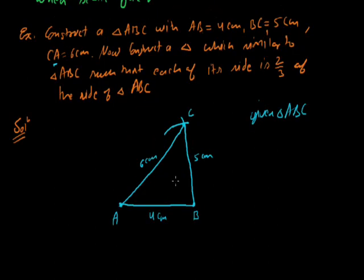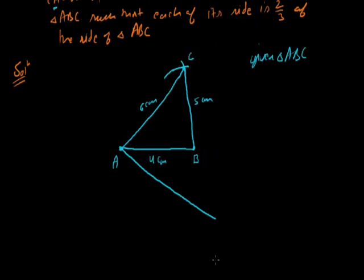Now the main construction starts. We draw an acute angle at A. The scale factor given is 2 by 3 — 2 corresponds to the constructed triangle and 3 corresponds to the given triangle.